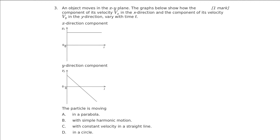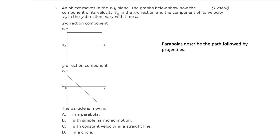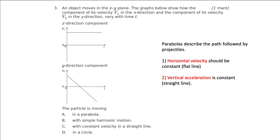We've now got two graphs: constant velocity in the x-direction, and velocity in the y-direction which has a constant gradient — i.e. a constant acceleration. A parabola is the path which describes the motion of a projectile. The horizontal velocity should be a constant flat line, and the vertical acceleration should be constant, giving a straight line for Vy — and that's why our particle is moving in a parabola.